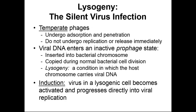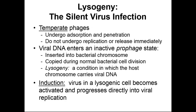If we expose that cell to stressful situations, we can initiate induction — leaving the lysogenic state and immediately starting viral reproduction. Every now and again, phage genes incorporated into bacterial chromosomes can cause the production of toxins or enzymes that make humans sick. This is known as lysogenic conversion, when the bacterium acquires a new trait from the temperate phage. For example, Corynebacterium diphtheriae sometimes produces the diphtheria toxin and sometimes doesn't — that's a lysogenic conversion. Similarly, going from producing to not producing the cholera toxin is a lysogenic conversion. Clostridium botulinum can also undergo lysogenic conversion from non-pathogenic to pathogenic, starting to produce the botulism toxin.